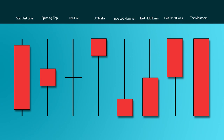Generally speaking, the longer the body is, the more intense the buying or the selling pressure. Conversely, short candlesticks would indicate little price movement and could represent consolidation. This is the standard line that we can see here, which is red, indicating a lot of selling pressure.